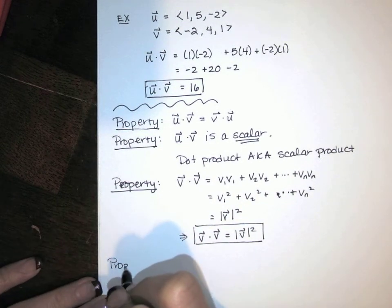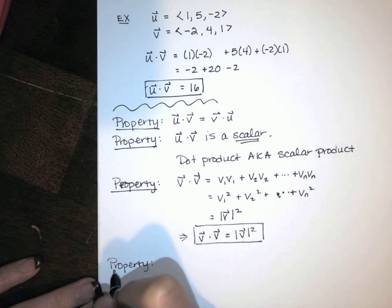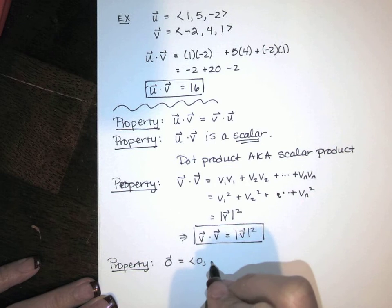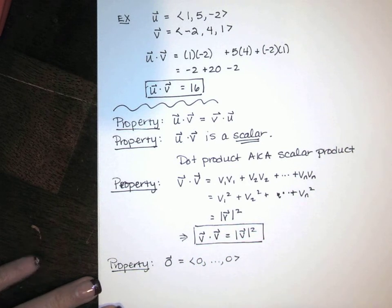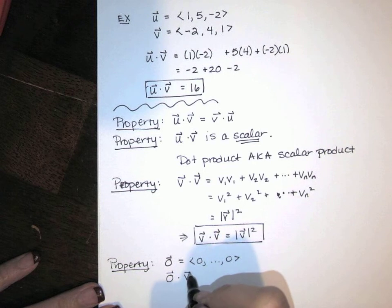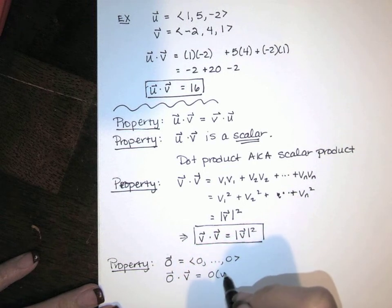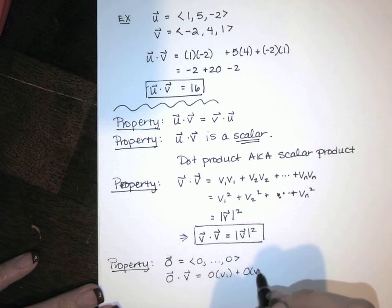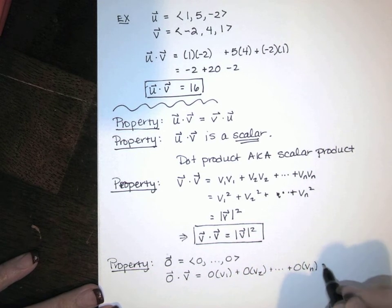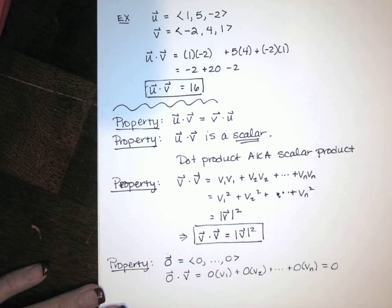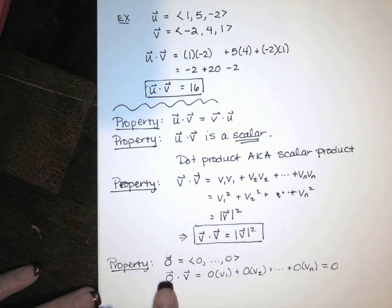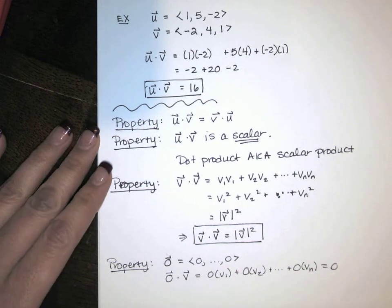And the zero vector — a vector with n zeros in n-dimensional space — dotted with any vector v, multiplying all those components by zero gives zero back. The zero vector dotted with any other vector is always zero.